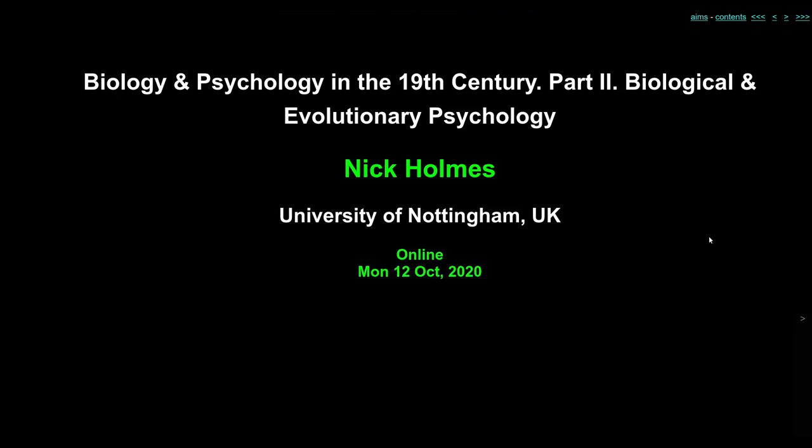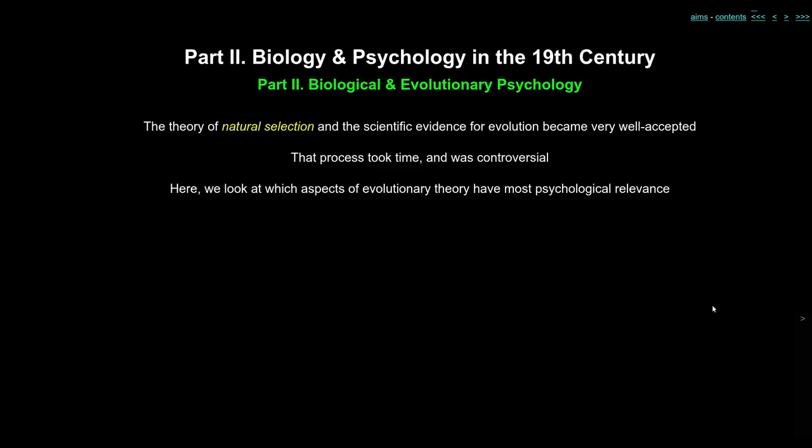In the next part of this lecture we're going to look at the biological and evolutionary influences on psychology, sticking mostly with the 19th century, the 1800s. In evolution, the theory of natural selection and the scientific evidence for evolution became very well accepted after Charles Darwin's book in 1859.